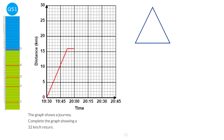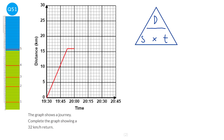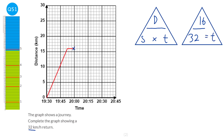Remember the speed distance time triangle: speed equals distance over time. We're given a distance of 16 kilometres and a speed of 32 kilometres per hour. To find the time, we do 16 divided by 32 — the time is half an hour. If we start here and add half an hour, that brings us to 20:30.